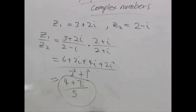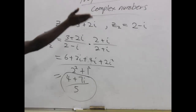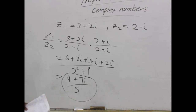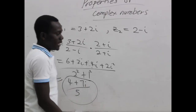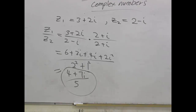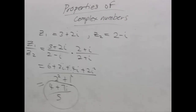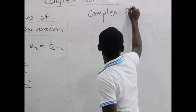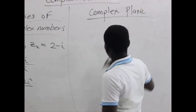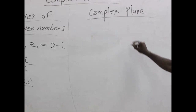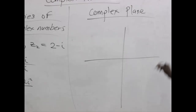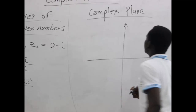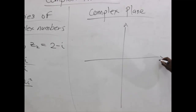To end this lesson, let's see how we can represent complex numbers on what we call the complex plane. Assuming we have a Cartesian plane with a vertical axis and a horizontal axis.